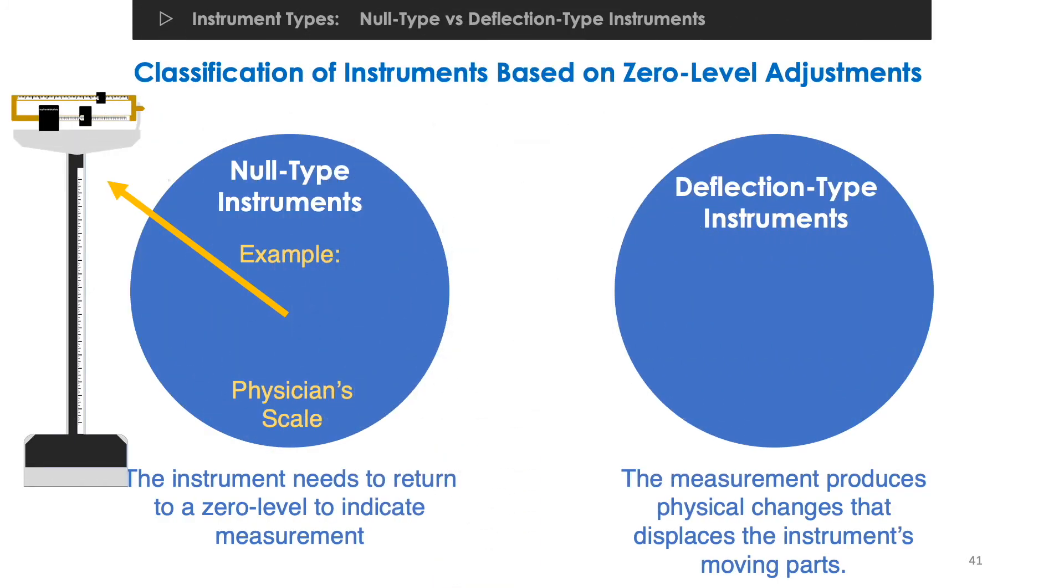On the other hand, a deflection type instrument is an instrument where the actual measurement causes physical changes that displaces the instrument's moving part. This moving part usually point to a label that displays the value of the measurement. The positioning of the label is a result of careful calibration of the instrument. For example, a weighing scale has a moving part that deflects when an object is placed on its platform.